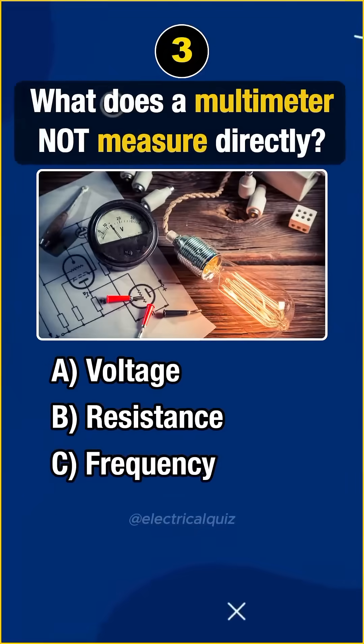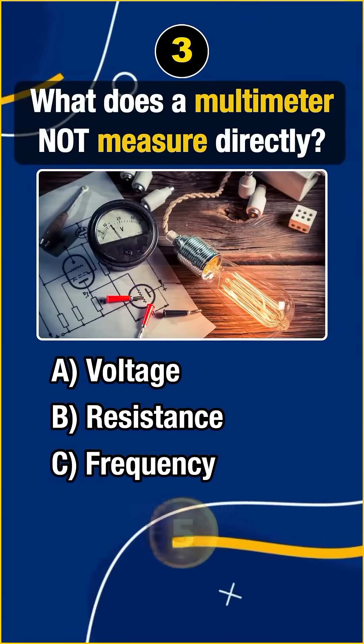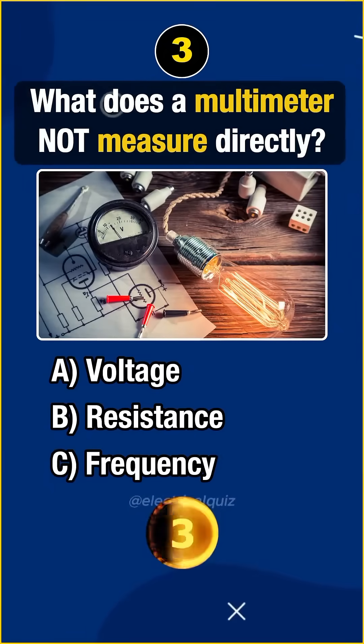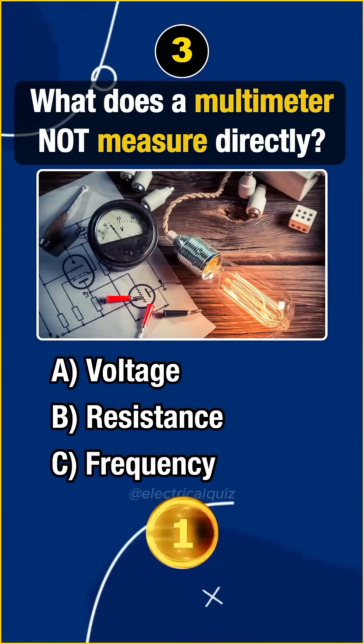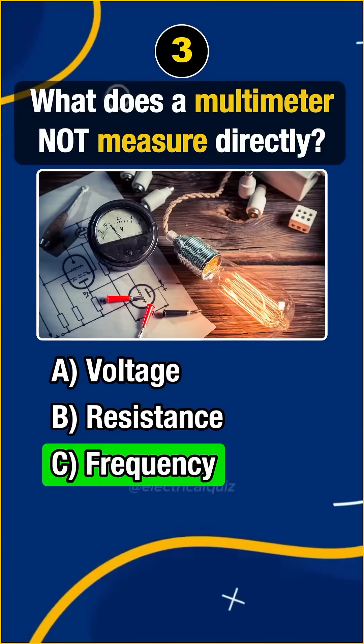Question 3. What does a multimeter not measure directly? Answer: C. Frequency.